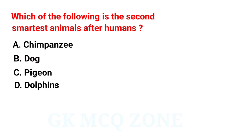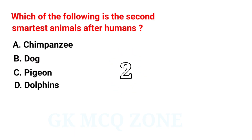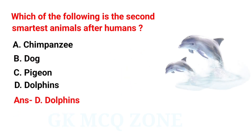Which of the following is the second smartest animal after humans? The correct answer is option D: Dolphins.